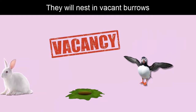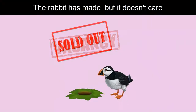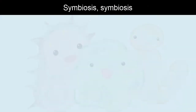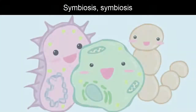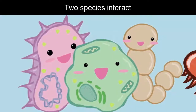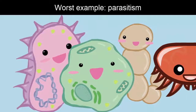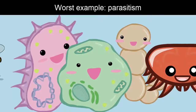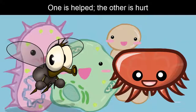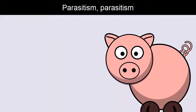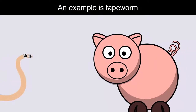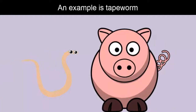Puffins will nest in vacant burrows that the rabbit has made, but it doesn't care. Symbiosis, symbiosis, two species interact. Next example: parasitism — one is helped, the other is hurt. Parasitism, parasitism, an example is tapeworm.